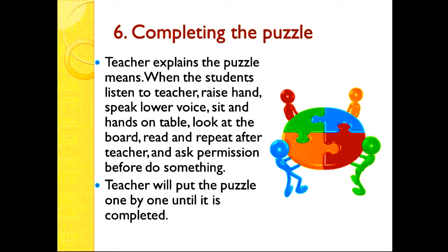Number six: completing the puzzle. You need a whole puzzle. Show it first, then take out all the pieces and put just one or two pieces down. Explain to the students: when they listen to the teacher, raise their hand, speak in a low voice, sit with hands on the table, look at the board, read and repeat after the teacher, and ask permission before doing something, the teacher will add one puzzle piece at a time until it is complete. After it is completed, you can have a party or special activity.